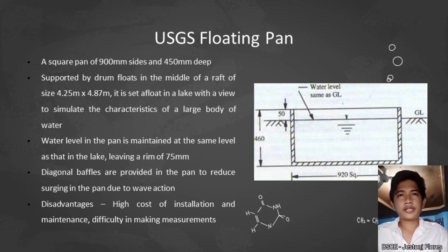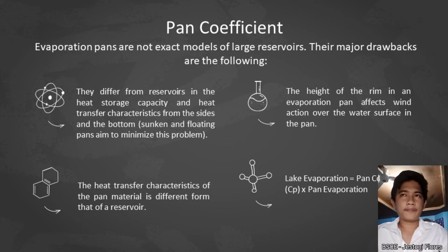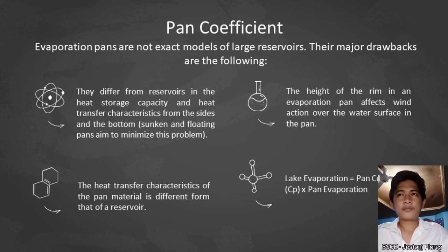The disadvantages of the USGS floating pan are its high cost of installation and maintenance, and the difficulty in making measurements. Regarding pan coefficients, evaporation pans are not exact models of large reservoirs. Their major drawbacks include differences in heat storage capacity and heat transfer characteristics from the sides and bottom, the effect of the pan rim on wind action over the water surface, and differences in heat transfer characteristics of the pan material compared to a reservoir. Lake evaporation equals the pan coefficient multiplied by pan evaporation.